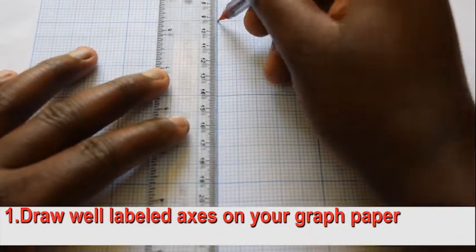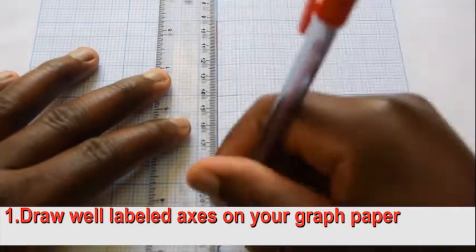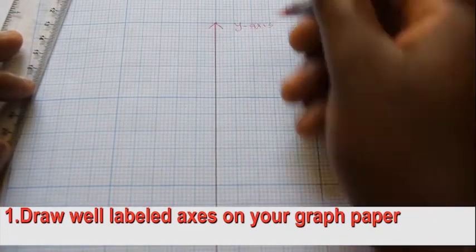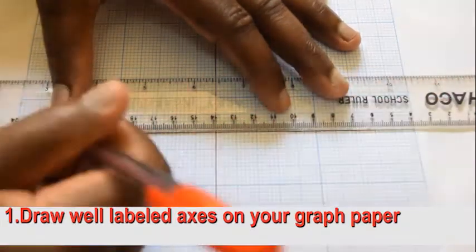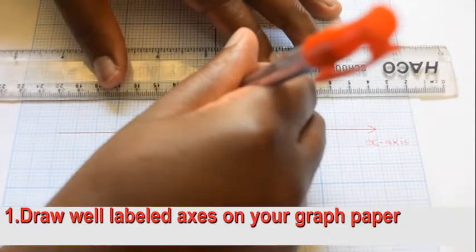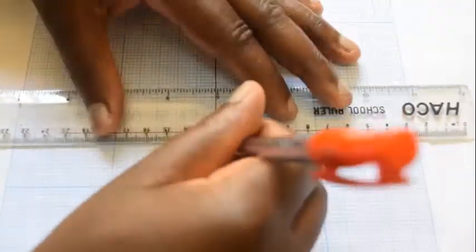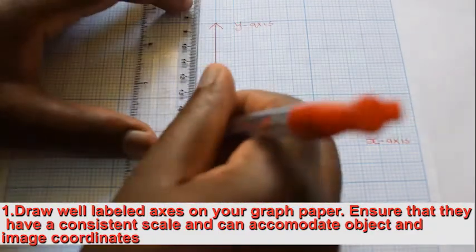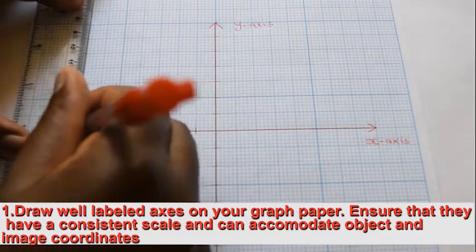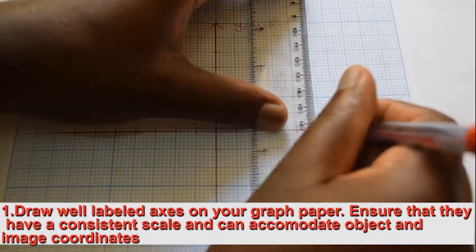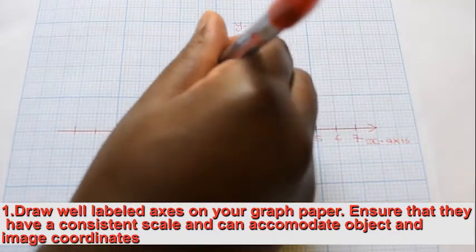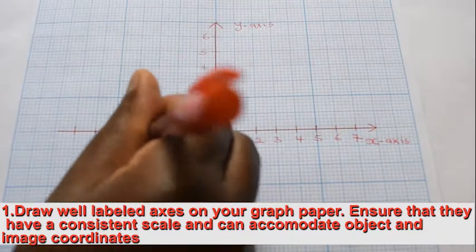Draw well-labeled axes on a squared paper, commonly known as graph paper. Ensure the axes have a consistent scale and are strategically placed to give room for both object and image coordinates.